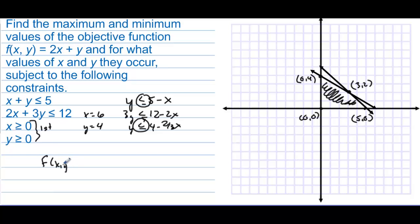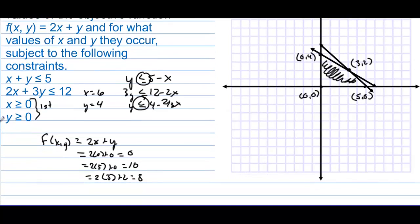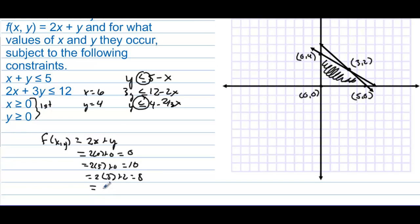Evaluating f(x, y) = 2x + y at each vertex: at (0, 0) we get 2(0) + 0 = 0; at (5, 0) we get 2(5) + 0 = 10; at (3, 2) we get 2(3) + 2 = 8; and at (0, 4) we get 2(0) + 4 = 4.